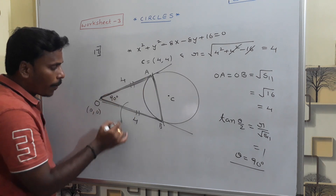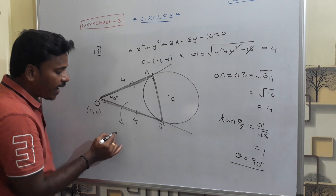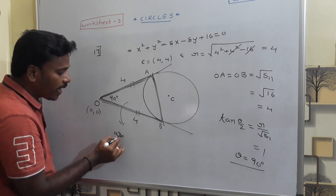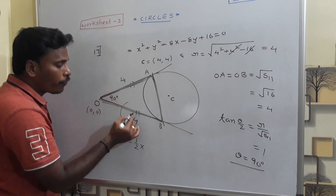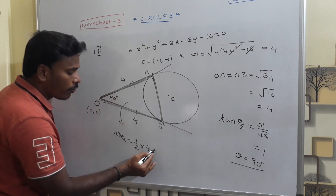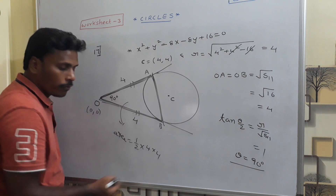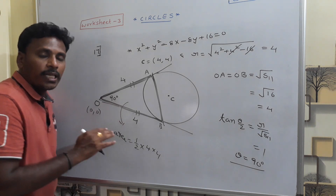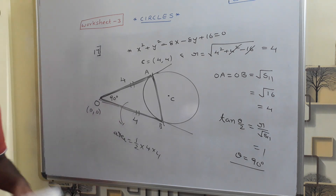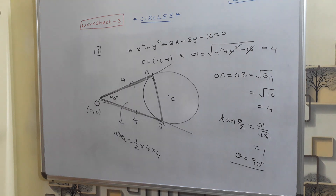Since OA = OB = 4 and the angle between them is 90°, the area of triangle OAB is ½ × OA × OB = ½ × 4 × 4 = 8 square units. That is the answer.